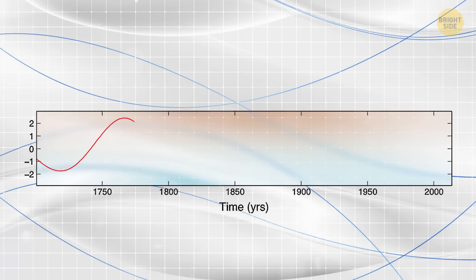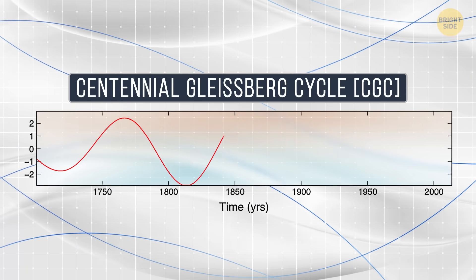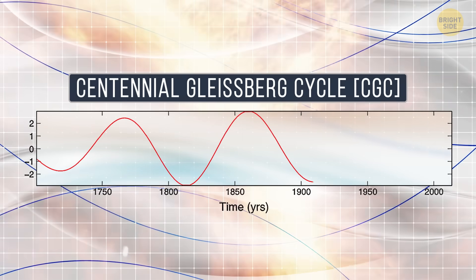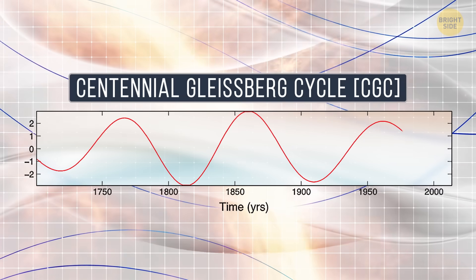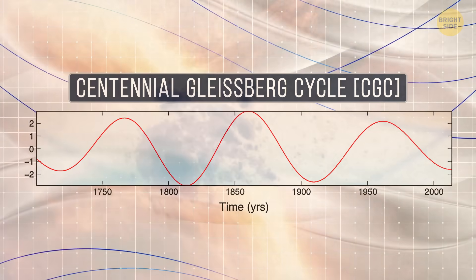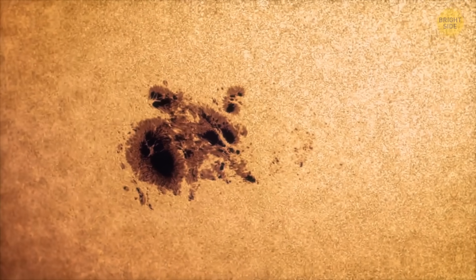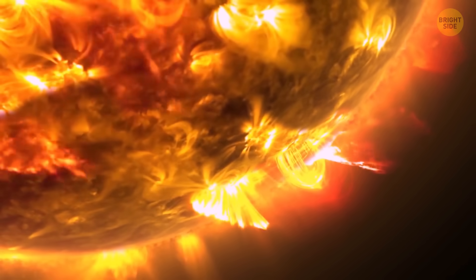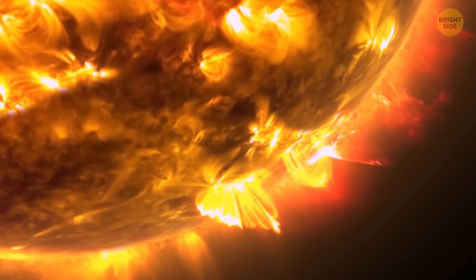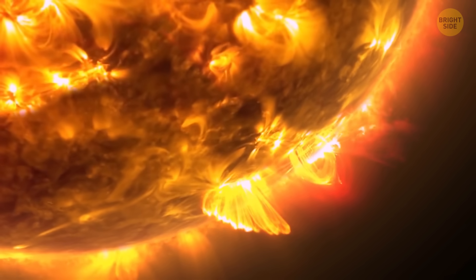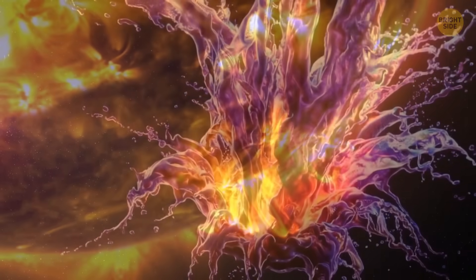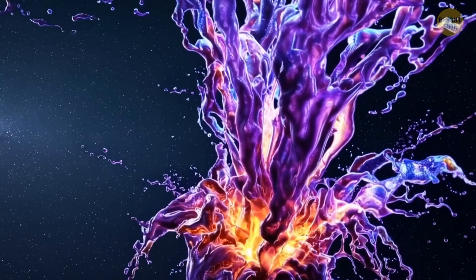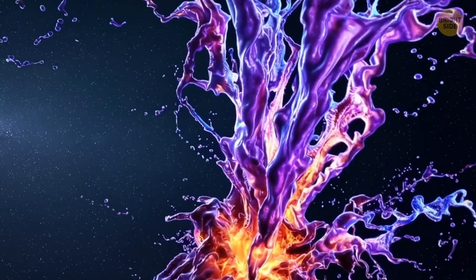This extra phase is called the Centennial-Gleisberg cycle. It's basically the Sun's once-every-100-years-I-do-something-weird moment. Scientists think it messes with how intense sunspot cycles get. No one has fully worked out how this cycle works yet, but some low-key sloshing of magnetic fields inside the Sun might be causing it. Yep, I did say sloshing. Like a giant cosmic smoothie.